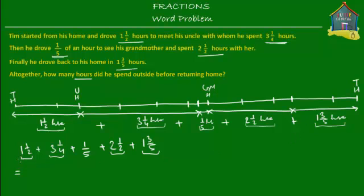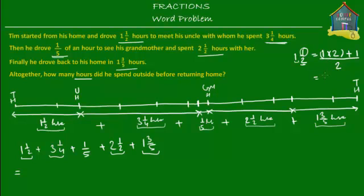Let's take the first mixed number, one and a half. To convert it to an improper fraction, you multiply the whole number — which is one — by the denominator, which is two, and then add the numerator, which is one, and put everything over two. So one times two is two, plus one is three — one and a half becomes three over two. So the mixed number one and a half is equal to the improper fraction three over two.